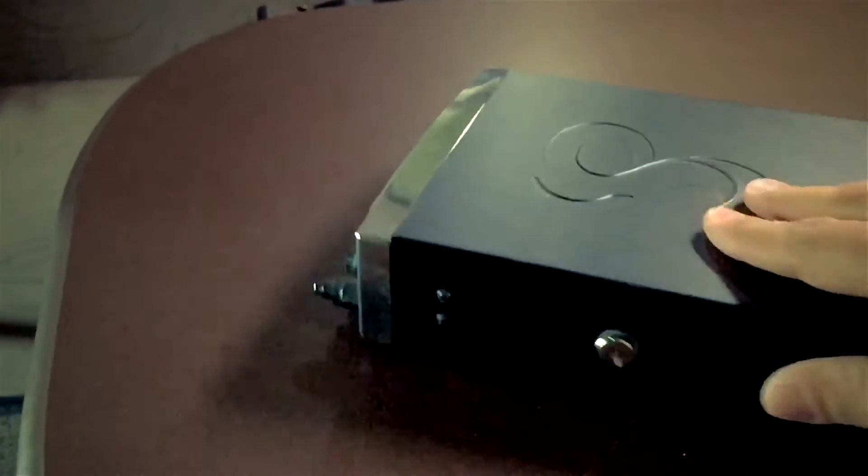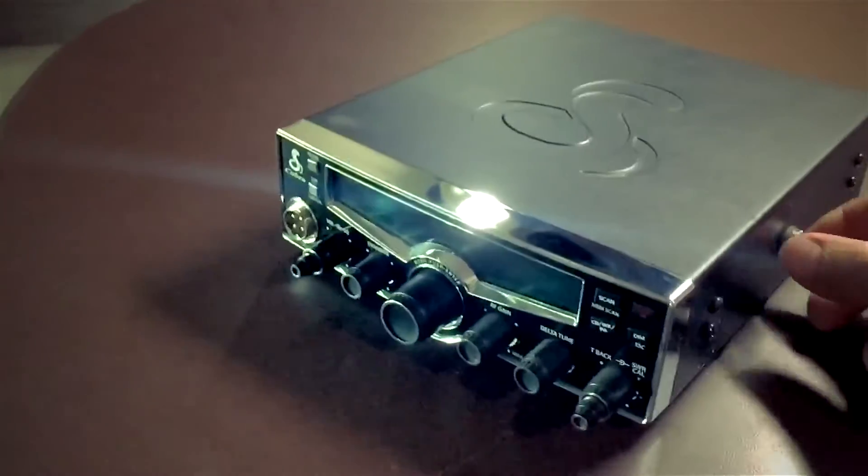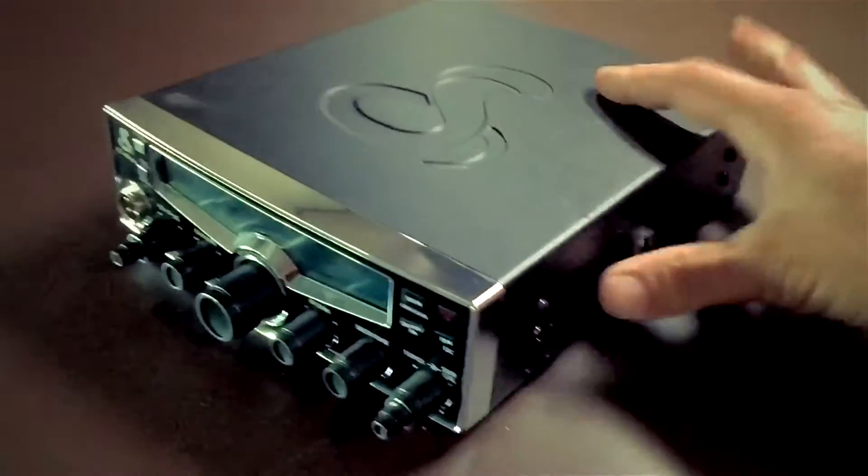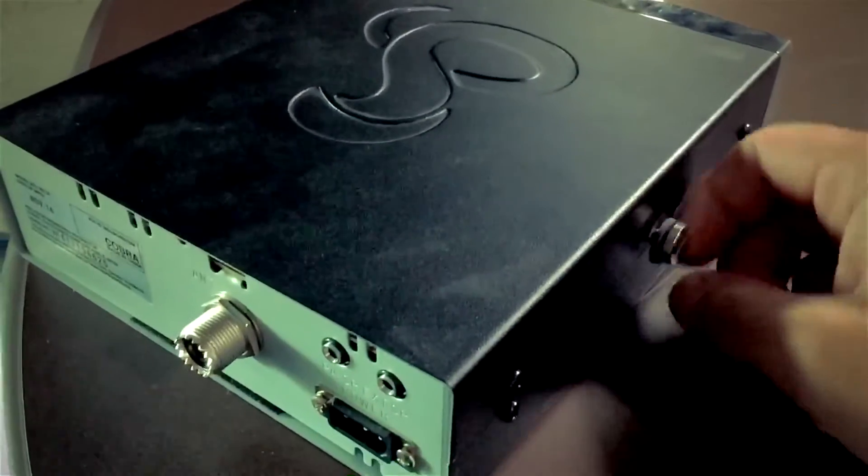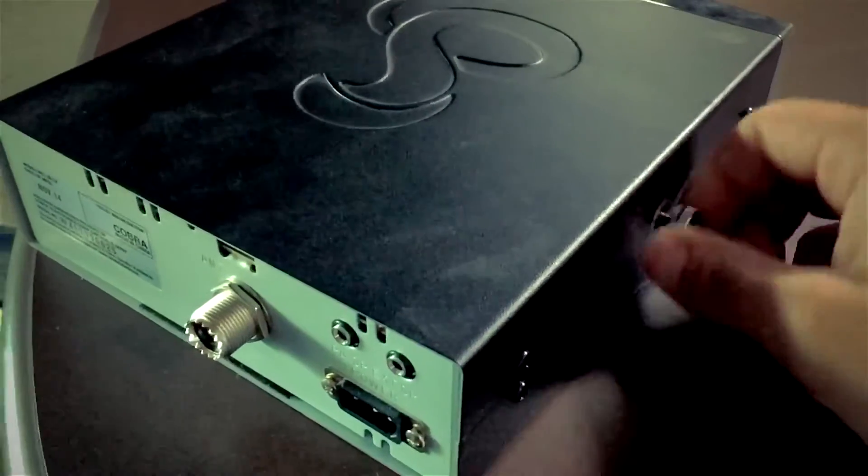After removing your radio, first thing you want to do is take off these little nuts on the side here. Just use a screwdriver or a knife to get it started and take them off.